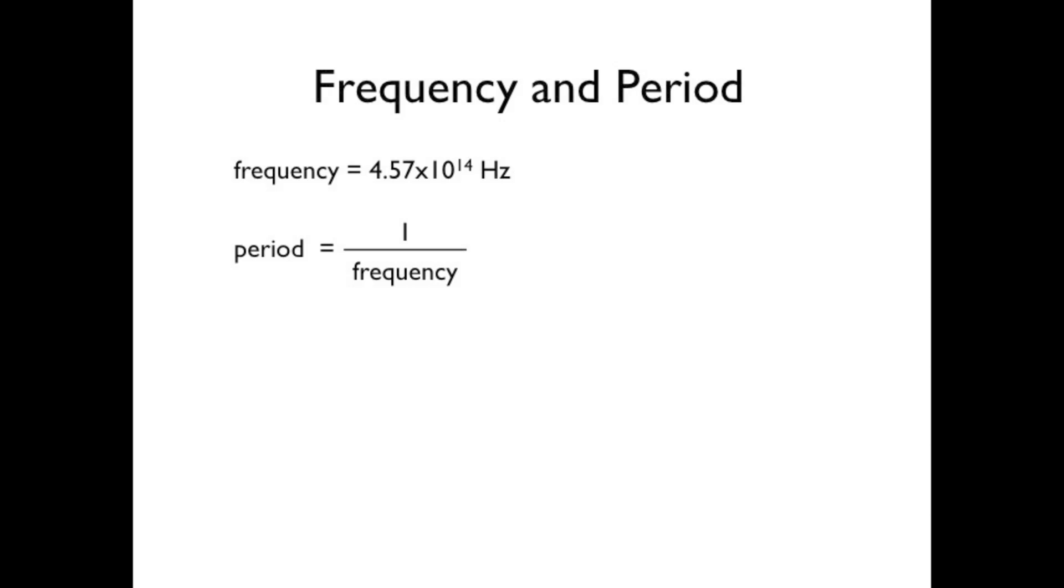To get the period of this wave, the time between wave peaks, you take the reciprocal of the frequency. The reciprocal of 4.57 times 10 to the 14 is 2.19 times 10 to the negative 15.